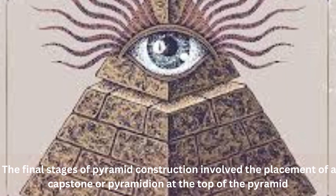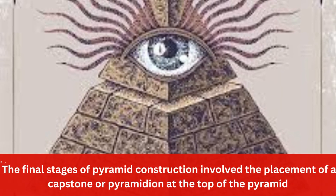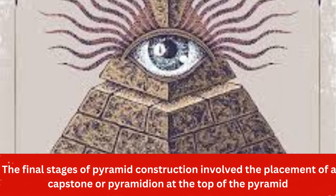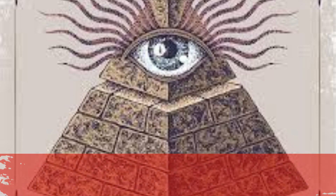The final stages of pyramid construction involved the placement of a capstone or pyramidion at the top of the pyramid, and the addition of a smooth outer layer of fine white limestone called casing stones. These stones were precisely cut and fitted together to create a smooth surface that shone in the sun.